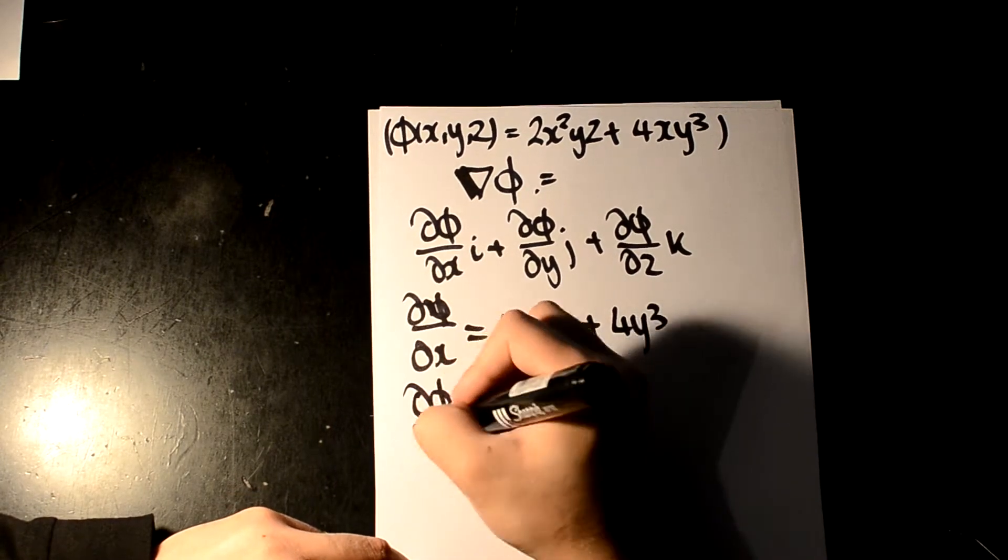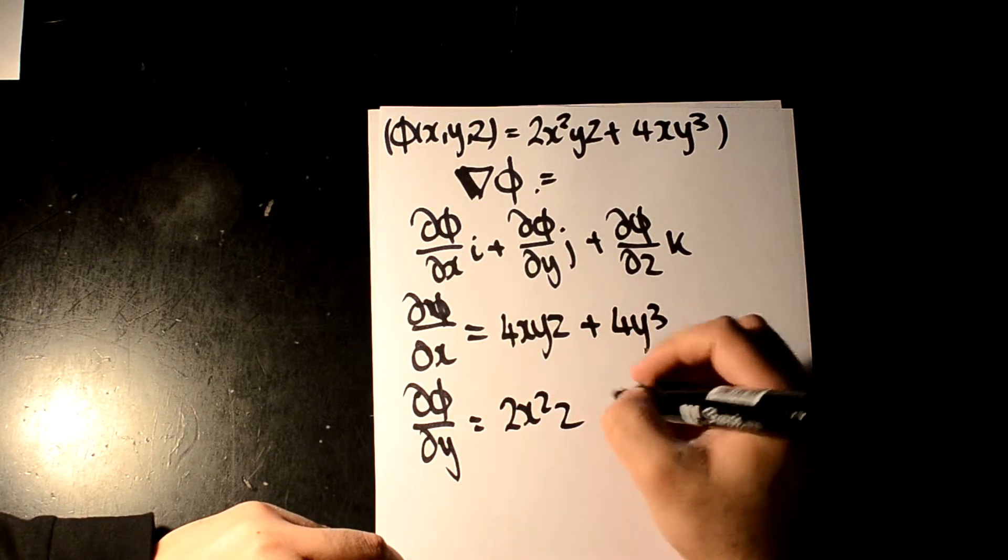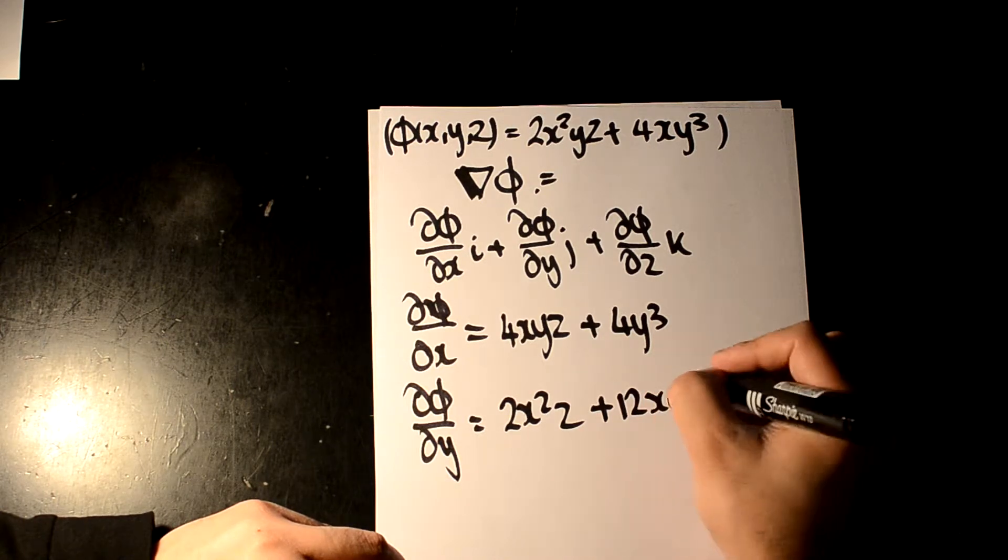And then for d phi dy, we're going to get 2x squared z plus 12xy squared.